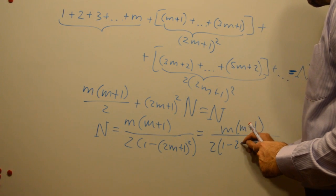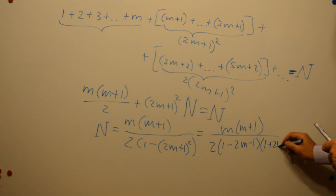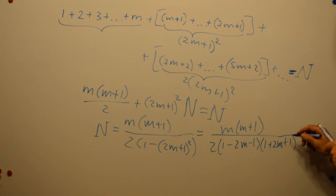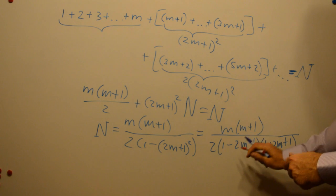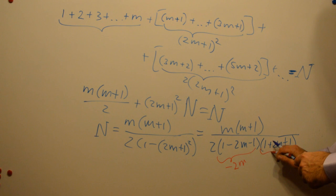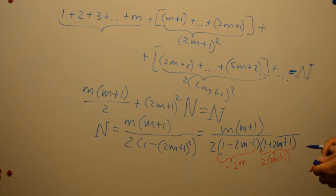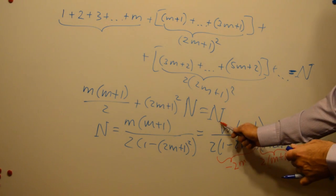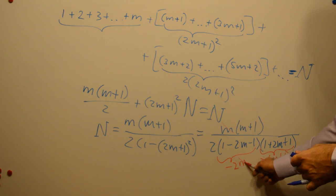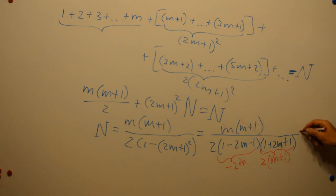1 minus 2m minus 1, 1 plus 2m plus 1. And this part here equals minus 2m, this part is 2 times m plus 1. And we can simplify this fraction and in the end we will get minus 1/8.